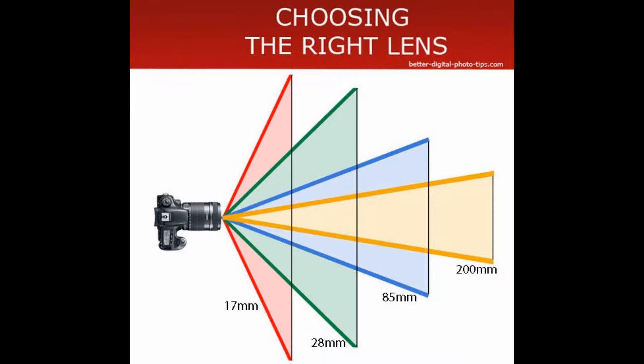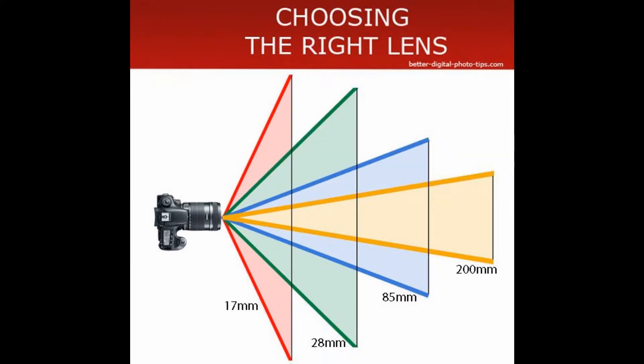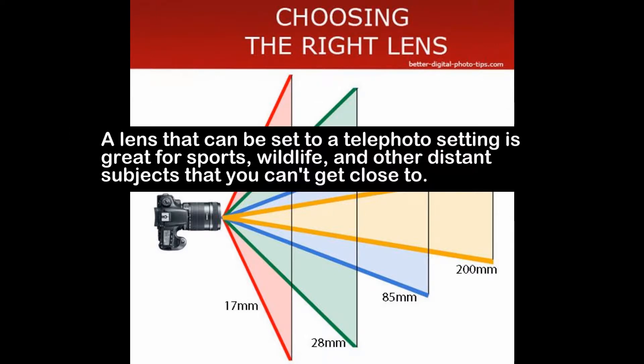No matter what the camera or lens, shorter focal lengths — the smaller numbers — give you a wider angle of view, and as you zoom in closer, the higher mm numbers give you a narrower angle of view and your subject appears closer. Using a wide angle lens perspective, a short focal length is good for landscapes, architecture, shooting in tight small areas inside, photographing large groups of people, or when you want to create a really strong perspective. Lenses with a long focal length are great for sports, wildlife, anything that's far in the distance or you can't get too close physically.